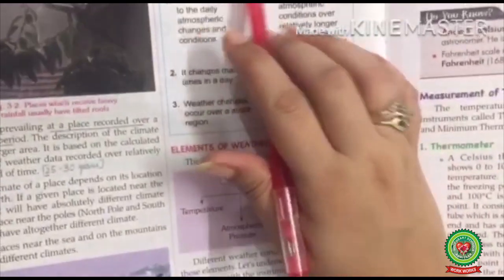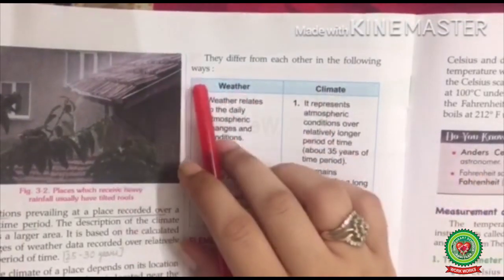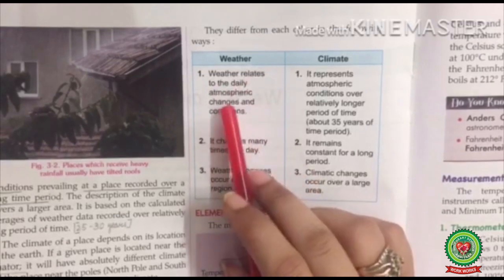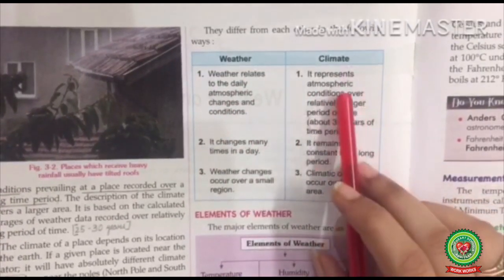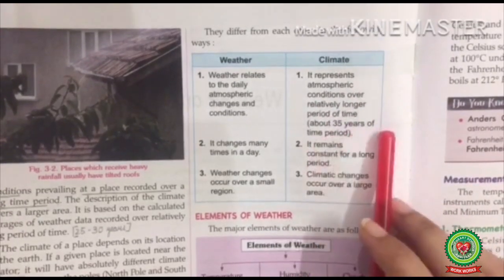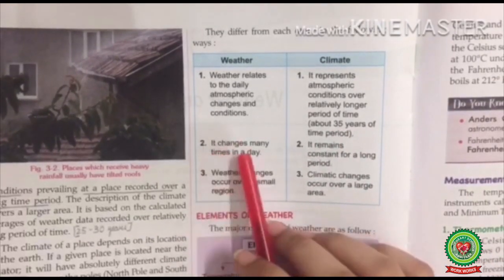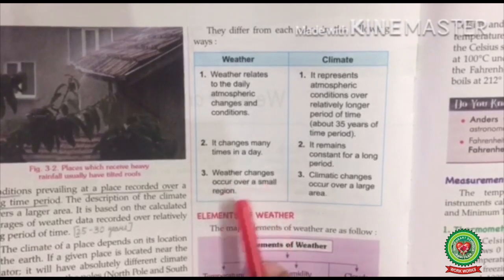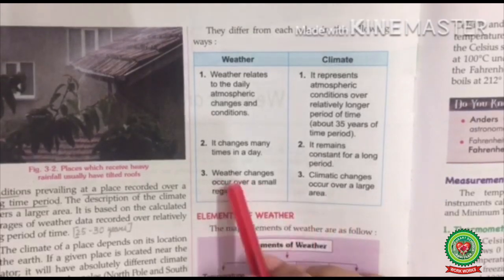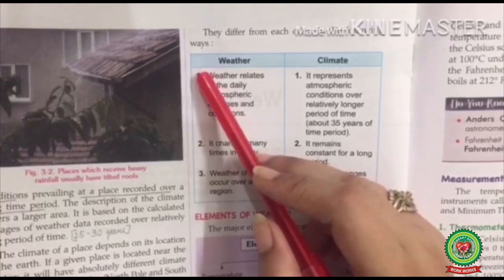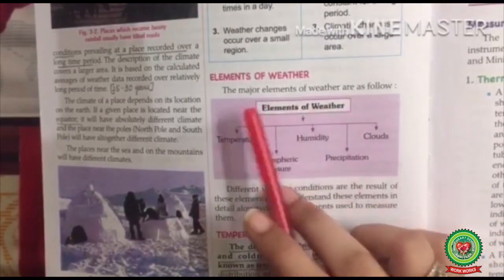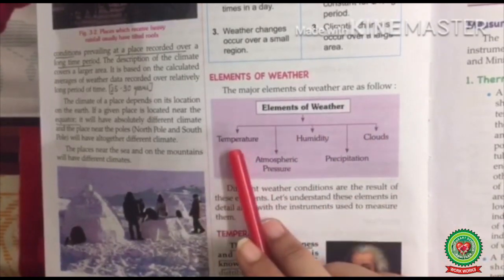Difference between weather and climate: the term climate should not be confused with weather. They differ from each other in the following ways. First — definition: weather relates to the daily atmospheric changes and conditions; climate represents atmospheric conditions over a relatively longer period, about 25-35 years. Second — duration: weather changes many times in a day; climate remains constant for a long period. Third — region: weather changes occur over a small region; climatic changes occur over a large area.